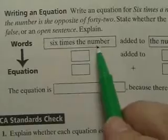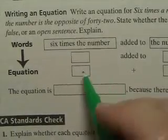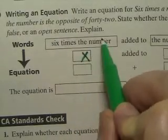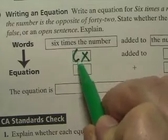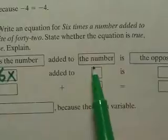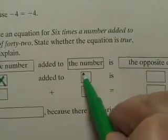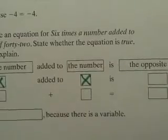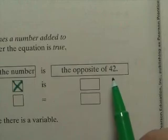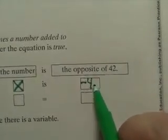Six times a number. Well, let's use a variable for number. Let's use the letter X. So six times a number would be, if X is a number, six times it would be 6X. Okay? And that is added to the number. What do we say the number is again? X.